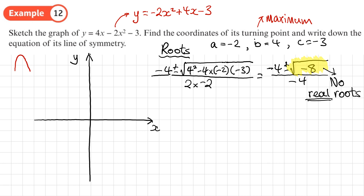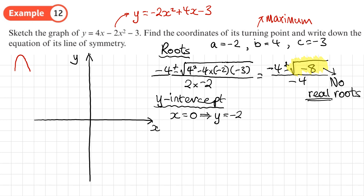Every quadratic has a y-intercept even if it has no x-intercepts. Setting x = 0: y = -2(0)² + 4(0) - 3 = -3. So the graph crosses the y-axis at -3. I can now sketch the N-shaped quadratic not touching the x-axis, crossing the y-axis at -3.